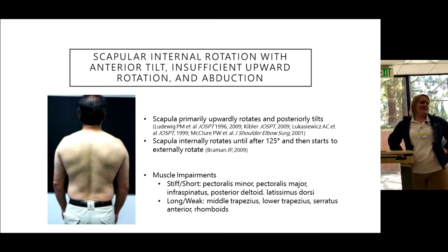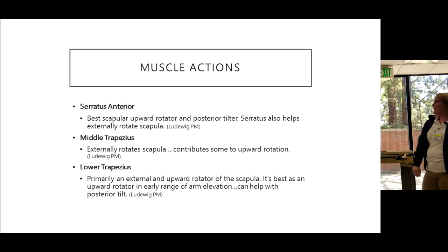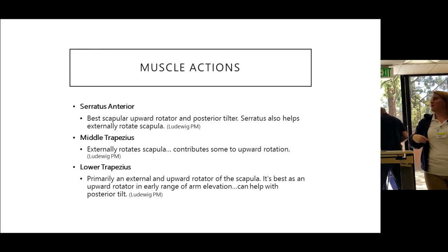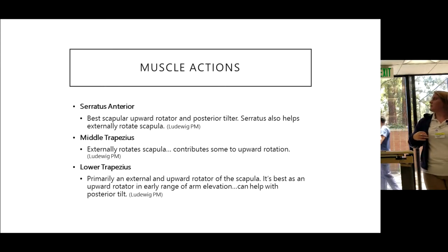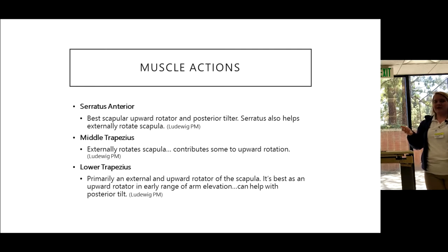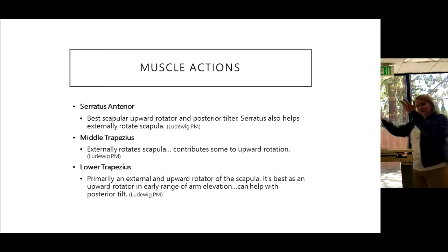This is why we do so many wall slides and mid-trap strengthening. Just a refresher: serratus anterior, lower trap, and middle trap are the three muscles most used during the wall slide exercises. We're strengthening them because they produce upward rotation, external rotation, and posterior tilt. If someone has internal rotation, we need external rotation. If someone has anterior tilt, we need posterior tilt. If they lack upward rotation, these three muscles increase it.